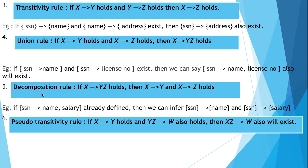The fifth rule is the decomposition rule. It is actually the reverse of the union rule. If x to yz exists, then we can define two functional dependencies from it: x to y and x to z. For example, if SSN to name and salary is already defined, we can derive SSN to name and SSN to salary.